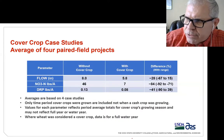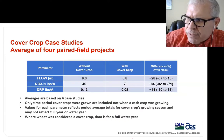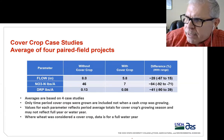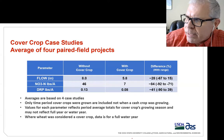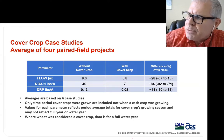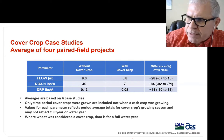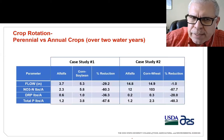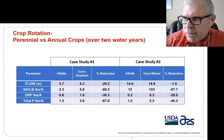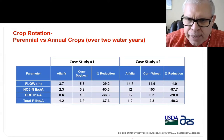Summarizing four paired field study sites with cover crops: nitrate loss reductions ranged from 71% to 92%. DRP reductions ranged from a negative 90% — meaning an increase — to a positive 39% reduction. So cover crops benefit us greatly from a nitrate management standpoint, but the phosphorus story remains highly variable.